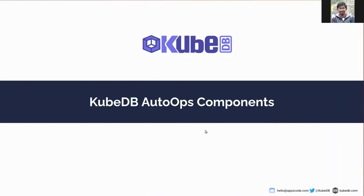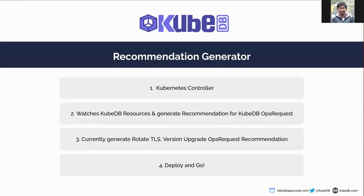In this video I am going to talk about one of the KubeDB AutoOps components called Recommendation Generator. Recommendation Generator is a Kubernetes controller — it watches KubeDB resources and generates recommendations for KubeDB ops requests. Currently, Recommendation Generator generates TLS recommendations to renew the TLS certificate for TLS-enabled databases, and version update recommendations to upgrade the database versions.